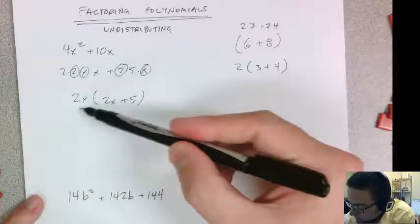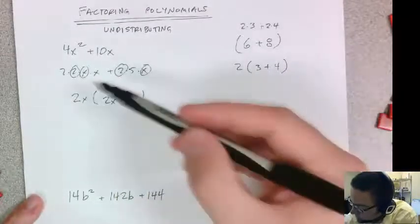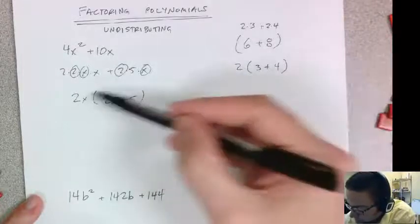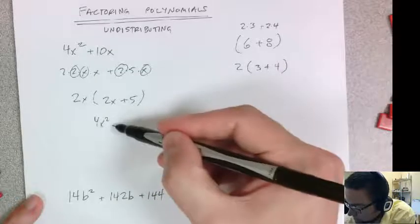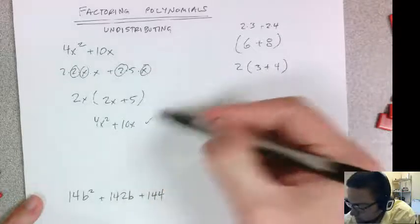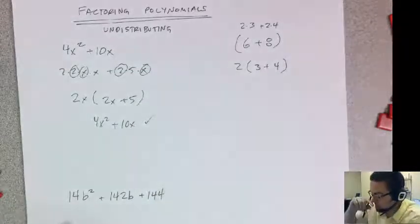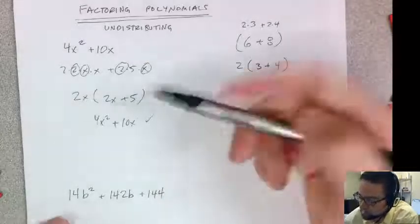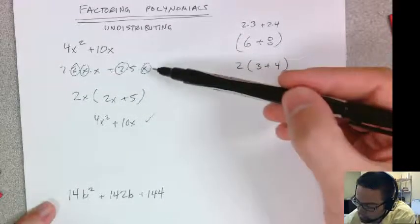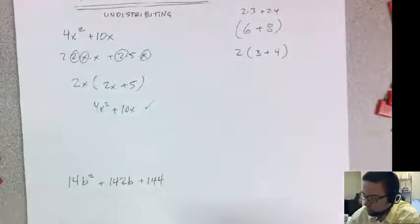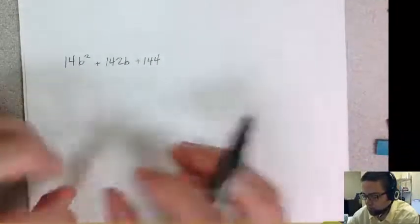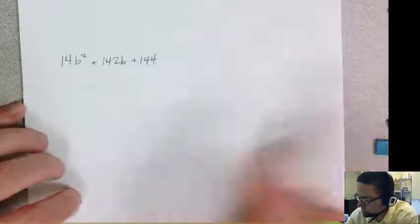So you can check your work, every time you can check your work, just multiply it out again. So 2x times 2x is 4x squared. 2x times 5 is plus 10x, so it checks out. Alright, so that's kind of the first step is always checking, can I factor the same thing out of every term first before I go through seeing if I can break it up into two binomials.